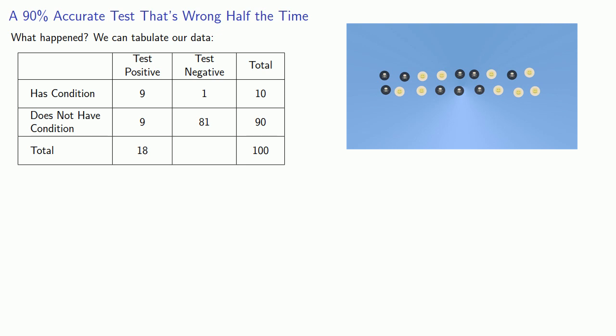And here's the thing to recognize. The test actually gives us the correct result in the 9 positive results for the people who have the condition and the 81 negative results for the people who don't have the condition. So the test gave the correct result in 9 plus 81, 90 cases. So it's a 90 percent accurate test. But fully half of those who tested positive do not have the condition.